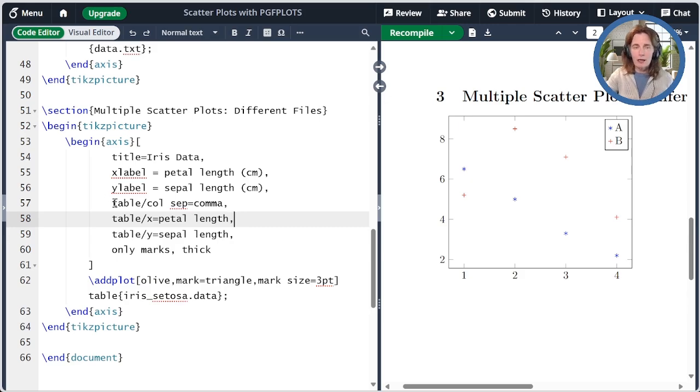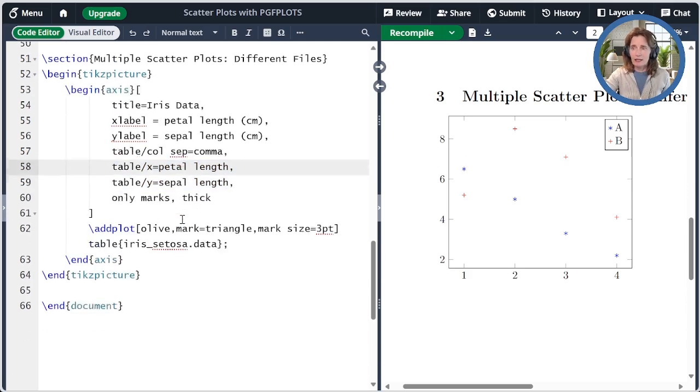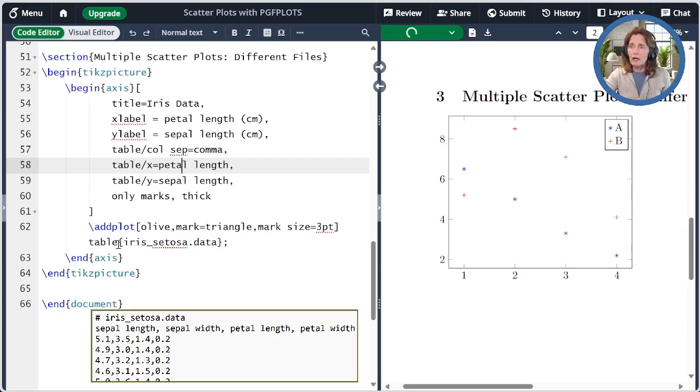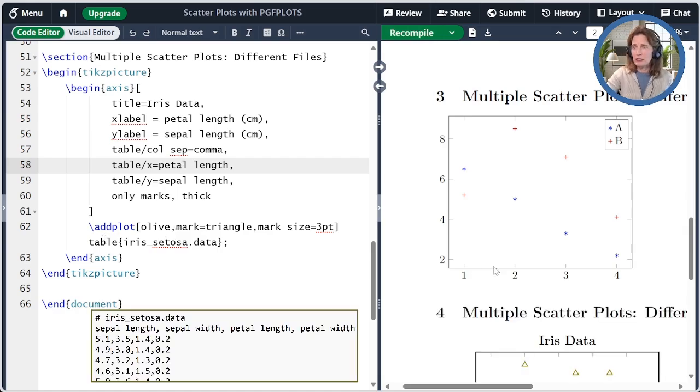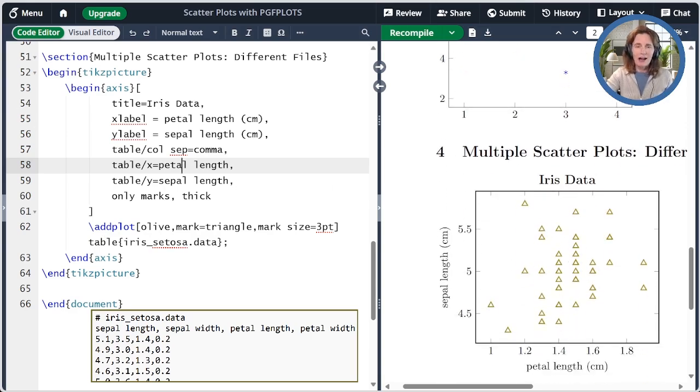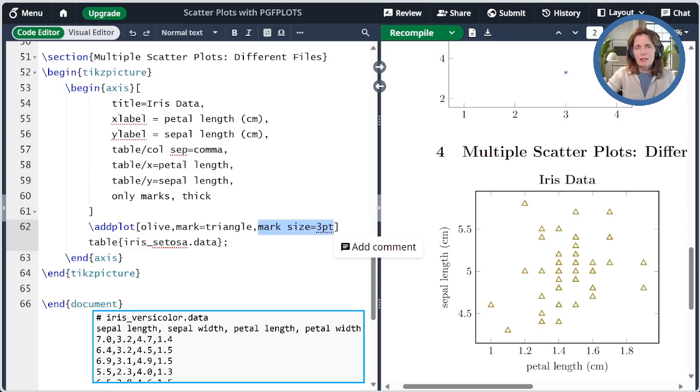And now I'm doing something sort of tricky. Rather than repeating the table options over and over again, I'm going to put them up here in the axis option, and I've preceded it with table slash. That lets it know it's a table option. So I'm setting the column separator to be a comma and the same x and y columns in every file. And then I'm specifying only marks, so I don't have to specify that for every addplot. I'm also going ahead and specifying that all the lines should be drawn as thick. So I just have one data file here, the Setosa data file, and so I'm drawing that as olive triangles. I'm also slightly changing the mark size from the default of two points up to three points so that it matches a little better than the others you'll see when we get to adding the extra files.